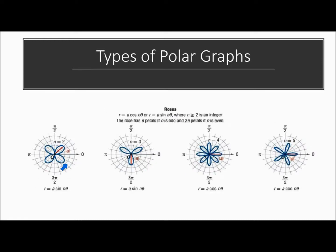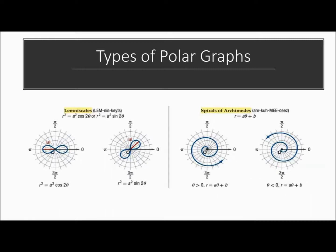Next we have roses. A rose has N petals if N is odd, and 2N petals if N is even. So if the coefficient in front of θ is 4, it would have 8 petals; if it's 5, you'd have 5 petals. After that, we're not going to deal too much with these unless you're using a graphing calculator — you have lemniscates, and then the spirals of Archimedes. A spiral will basically stop on your calculator where you can't see it any further.